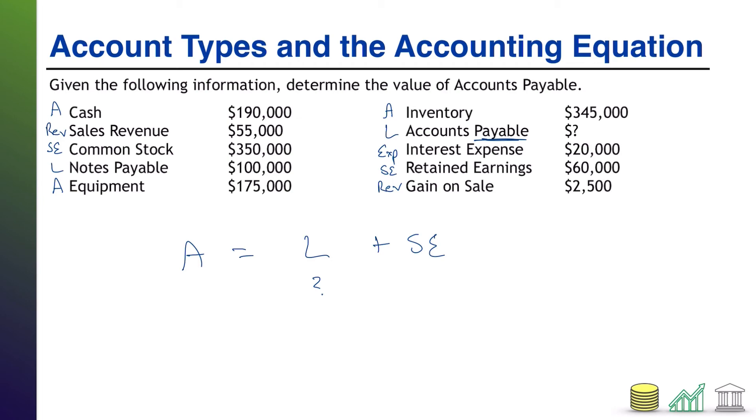So right out the gate, we can say, okay, well, these income statement items, sales revenue, interest expense, and gain on sale, we can take those out of the mix. Now we just have to put the other values where they go. So under assets, we've got 190 for cash, right? We've got 175 for equipment. We've got 345 for the inventory. And if we total all that up, that comes out to $710,000.